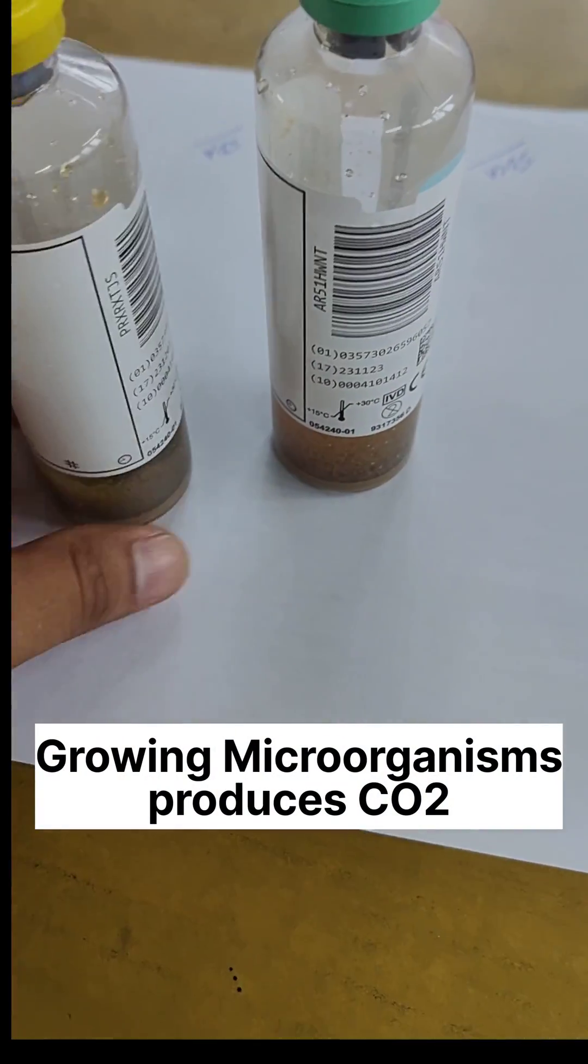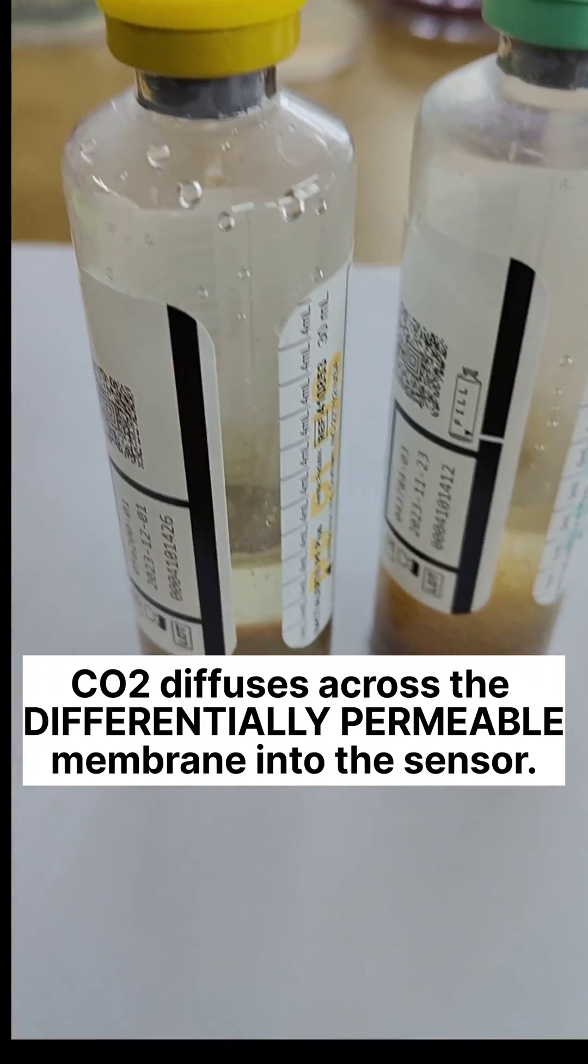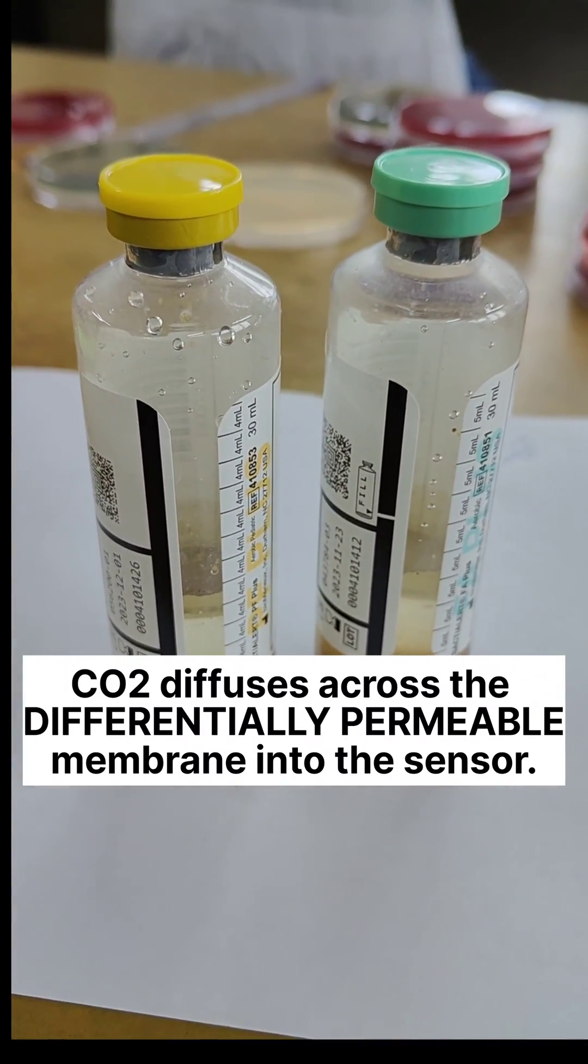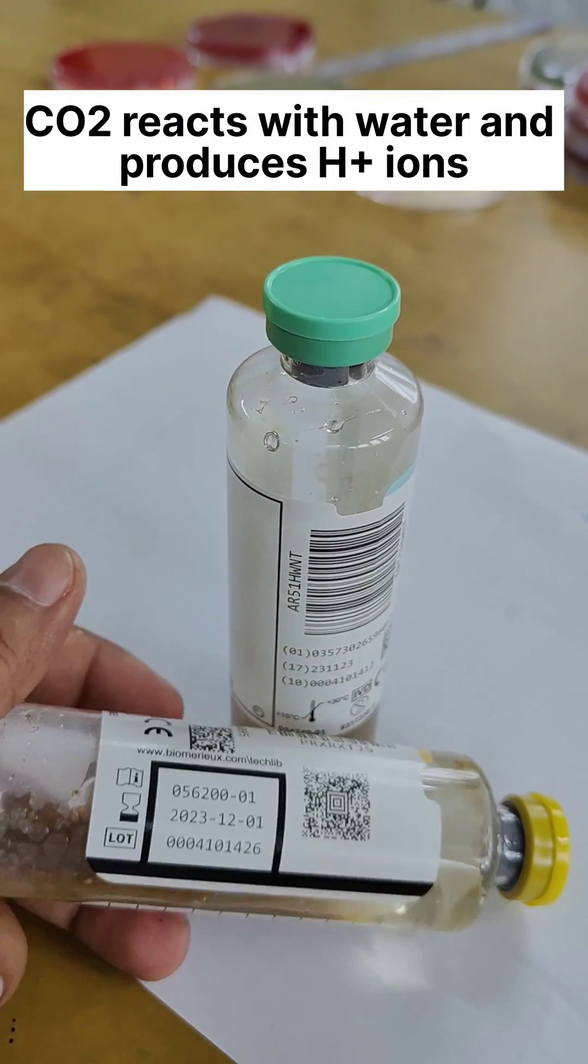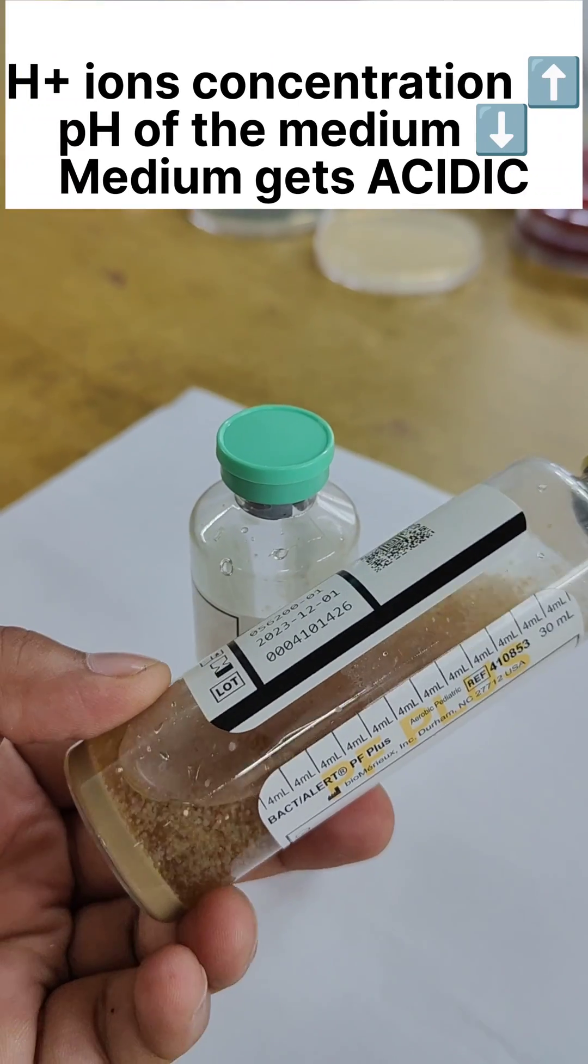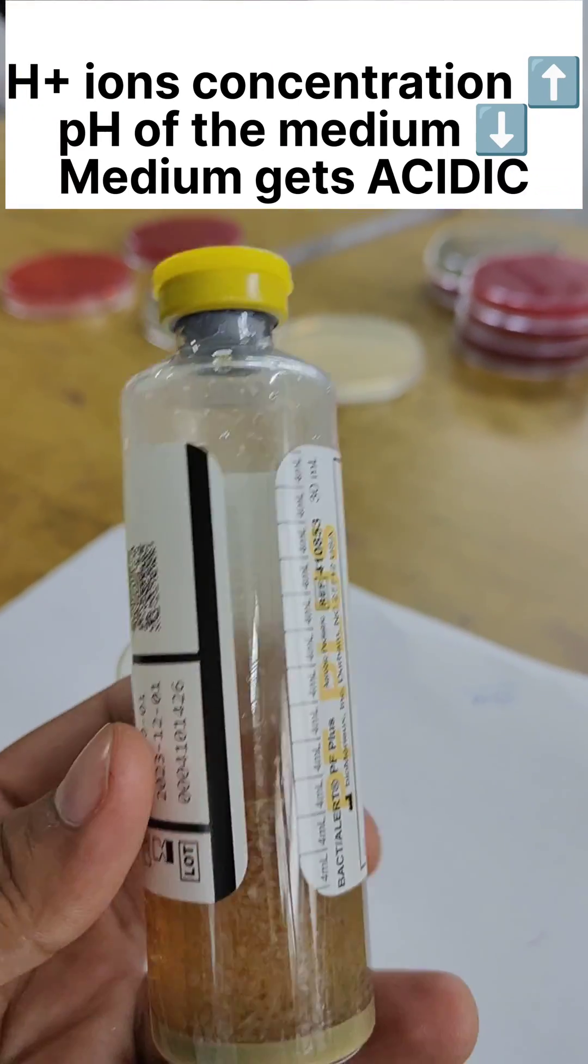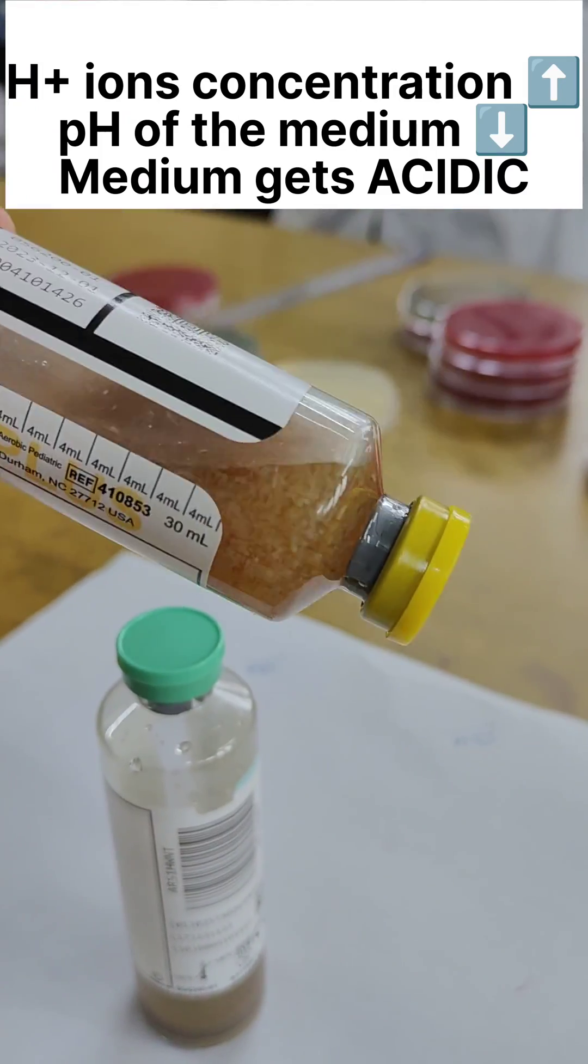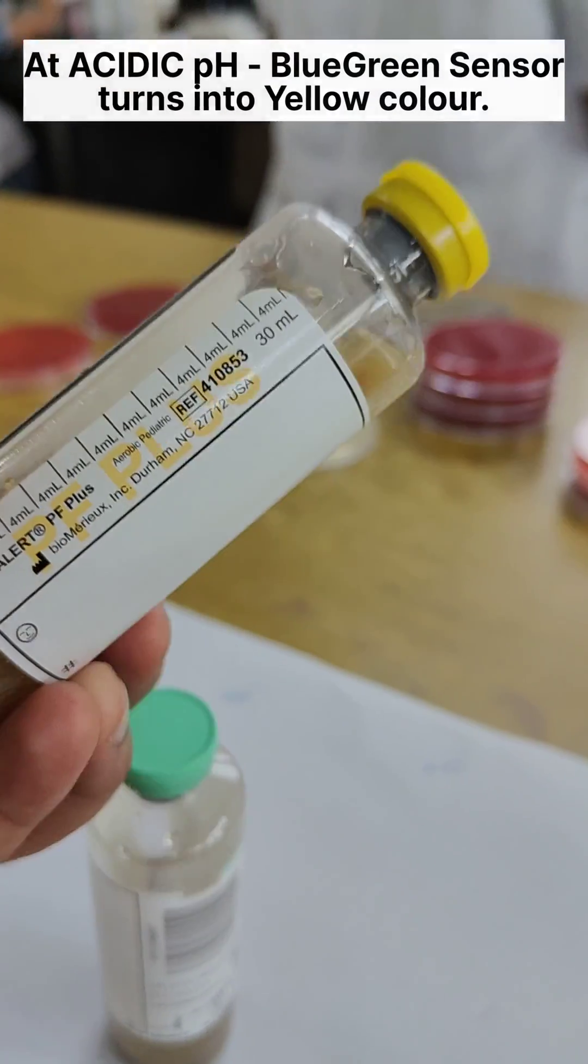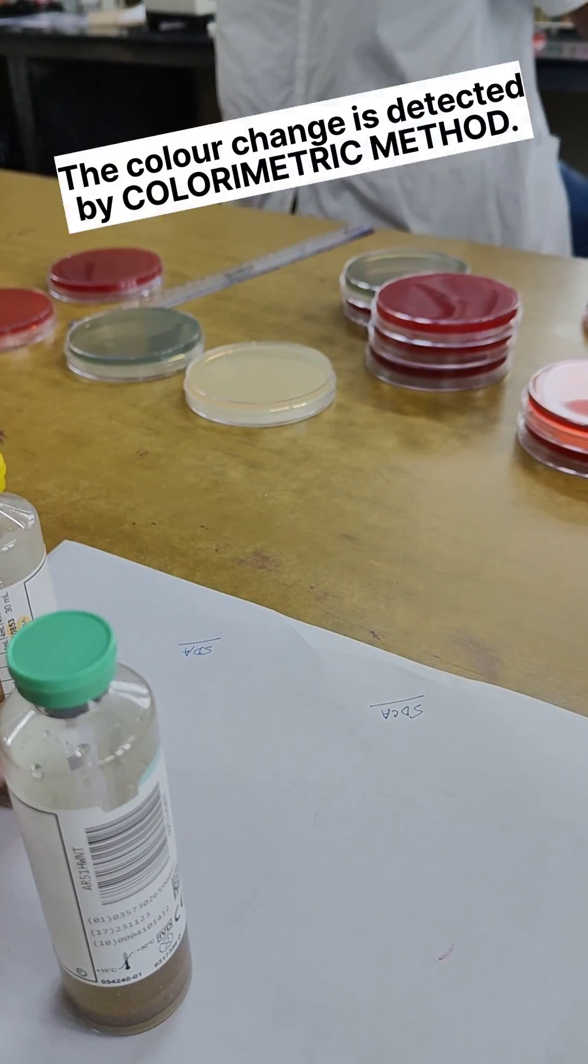Usually growing microorganisms produce carbon dioxide and this carbon dioxide diffuses across the differentially permeable membrane into the sensor where it reacts with water and generates hydrogen ions. As the hydrogen ion concentration increases, the pH of the medium decreases. Thus the medium becomes acidic and this acidic pH causes the blue-green sensor to turn yellow, and that change is detected by colorimetric method.